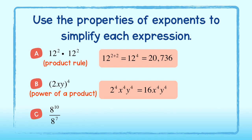And lastly, we can use the quotient rule to simplify C. We will subtract the exponents to get 8 to the 3rd, which is equal to 512. Way to go!